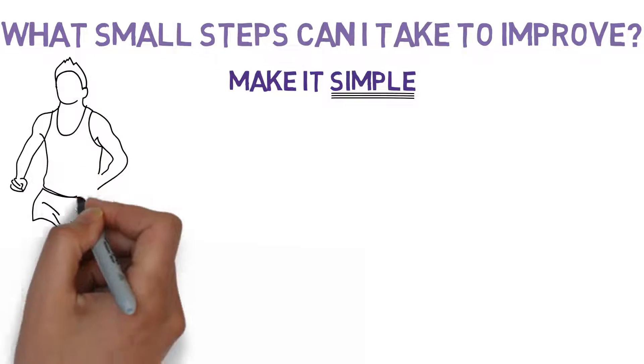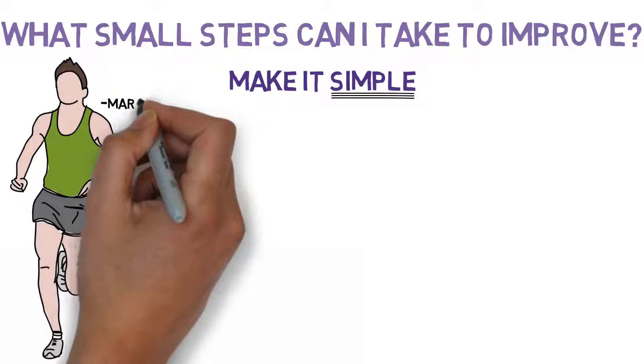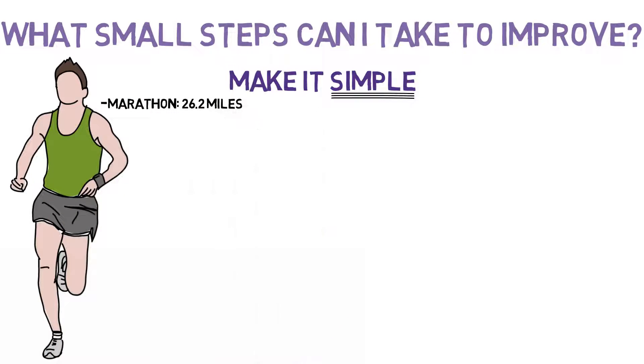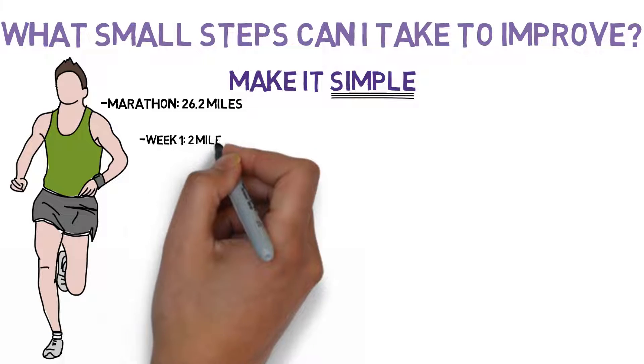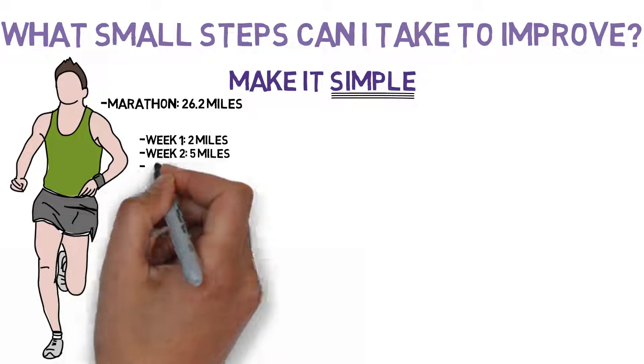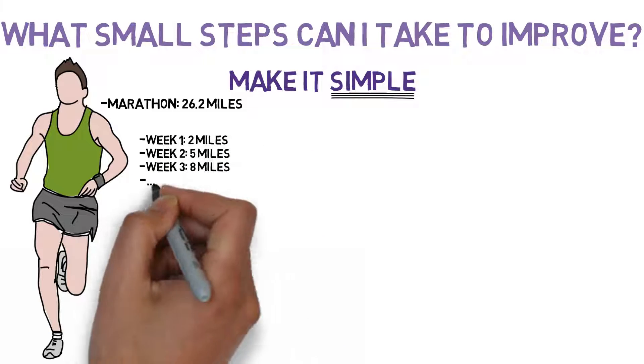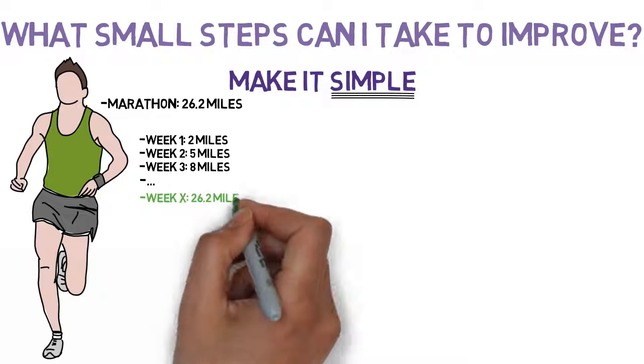Let's say you want to run a marathon. A marathon is 26.2 miles, but you can't do such thing without preparing. In order to prepare for such a long run, you can start by running 2 miles the first week, 5 miles on the second week, 8 miles on the third week and so on until you've reached your goal of 26.2 miles.